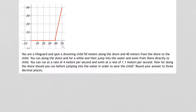Let's take a look at another optimization problem. You're a lifeguard and spot a drowning child 50 meters along the shore and 40 meters from the shore to the child. You run along the shore for a while and then jump into the water and swim directly to the child. You can run at 4 meters per second and swim at 1.1 meters per second. How far along the shore should you run before jumping into the water in order to save the child?